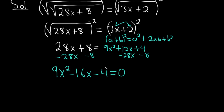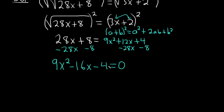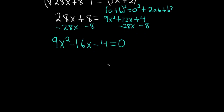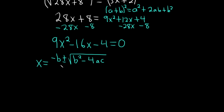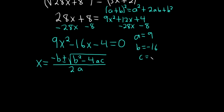We could try to factor this, but instead let's use the quadratic formula. The quadratic formula says the solutions are x equals negative b plus or minus the square root of b squared minus 4ac, all divided by 2a. In this case, a equals 9, b equals negative 16, and c equals negative 4.